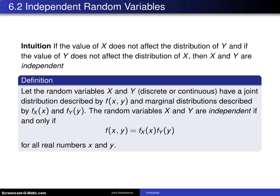So the next thing we're going to do here is define independent random variables. Just as way back in chapter two independence was defined for two events, now independence can be defined for two random variables.